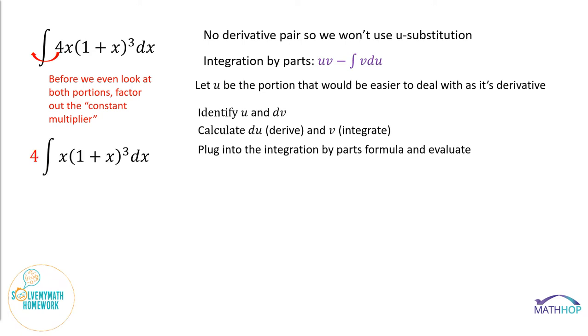You're going to get 4 times the integral of x times the quantity 1 plus x to the third. And now that is what we're going to deal with. So we're going to let u be the portion that would be easier to deal with as its derivative. Well, let's look at both parts.